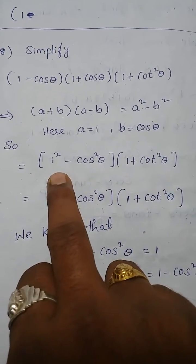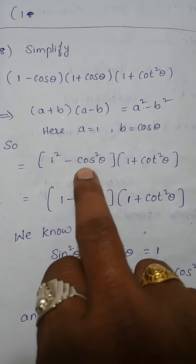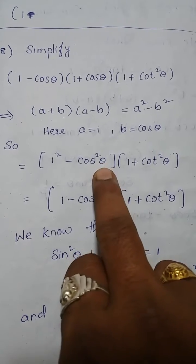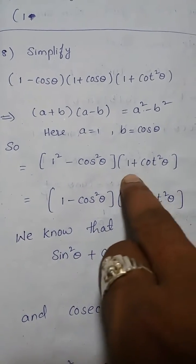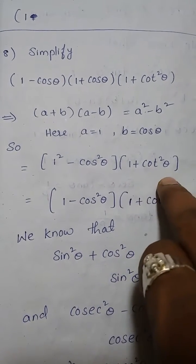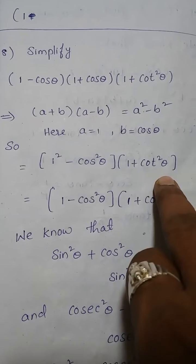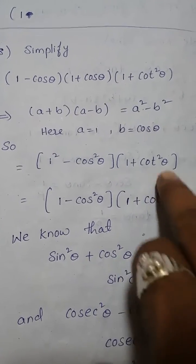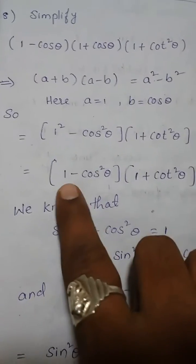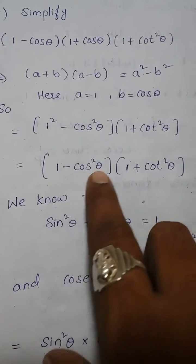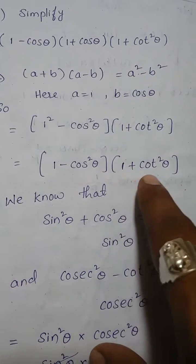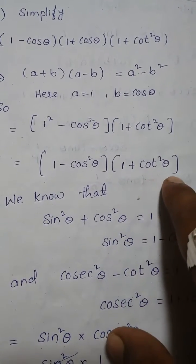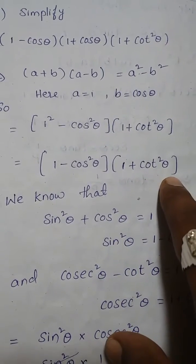Applying the identity: 1 square minus cos square theta, into (1 plus cot square theta). So the next step is: (1 minus cos square theta) into (1 plus cot square theta).